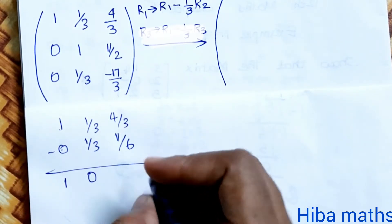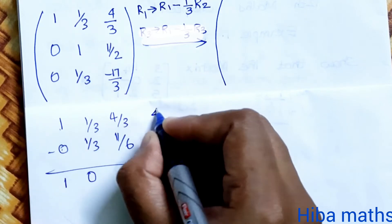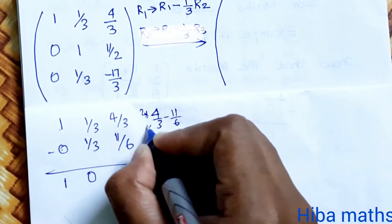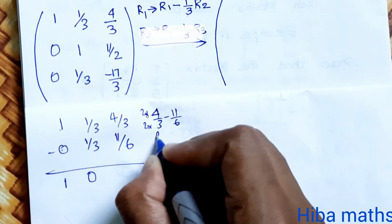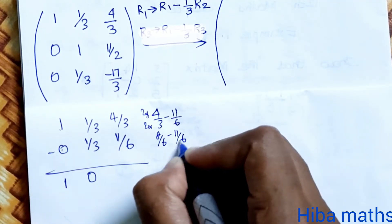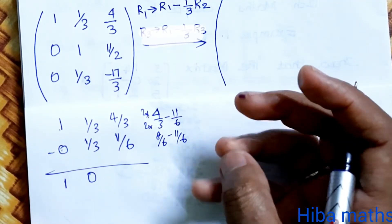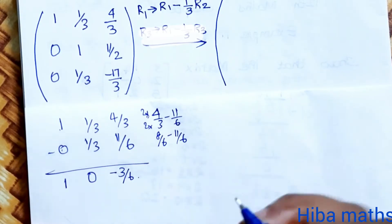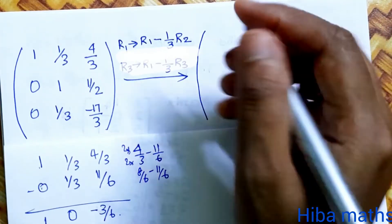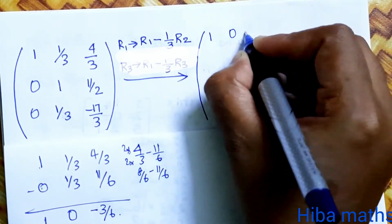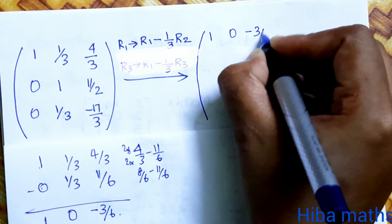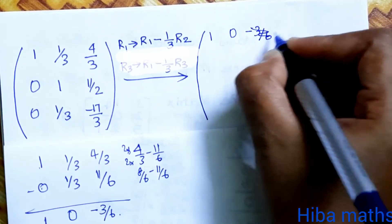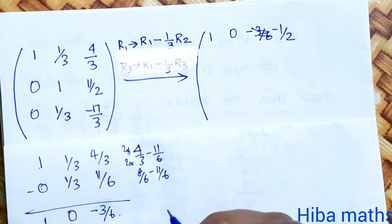We get 4/3 minus 11/6, converting: 8/6 minus 11/6 equals minus 3/6, which simplifies to minus 1/6. The matrix entries continue to be reduced.